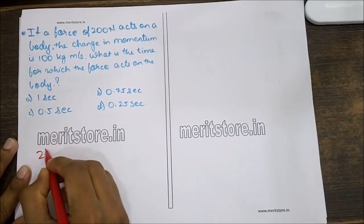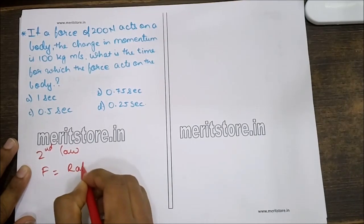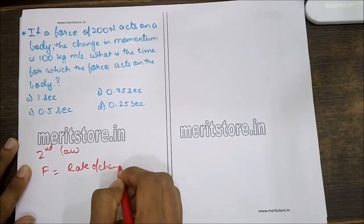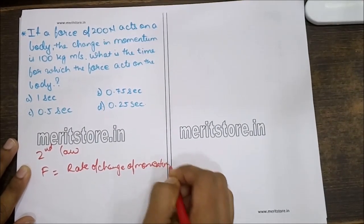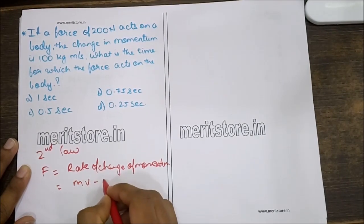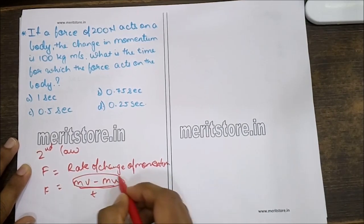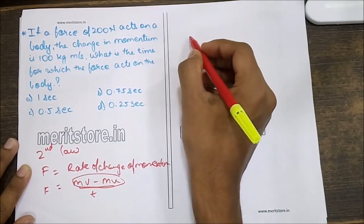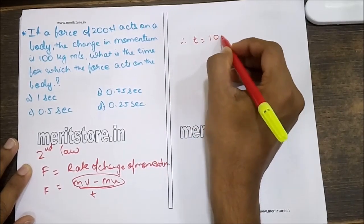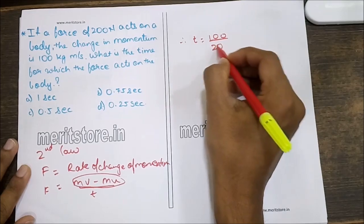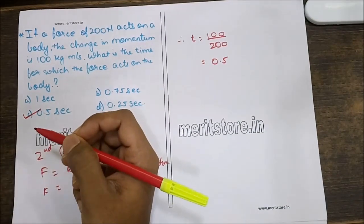According to Newton's second law, force is equal to rate of change of momentum, which is Mv minus Mu upon T. The change of momentum is given as 100 kg meters per second, so the time for which it would act is 100 upon 200 N, that is 0.5 seconds. Hence option C is the correct answer.